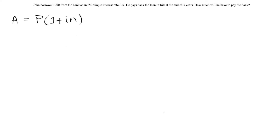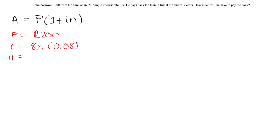This is the A-PIN formula. The principal amount — the initial money borrowed — is 200 Rand. The interest rate I is 8% per annum, or 0.08 as a decimal. Our N is the number of years: 3 years. Our A is what we need to calculate — how much John will have to pay the bank at the end of those 3 years at an 8% simple interest rate. That is our unknown.